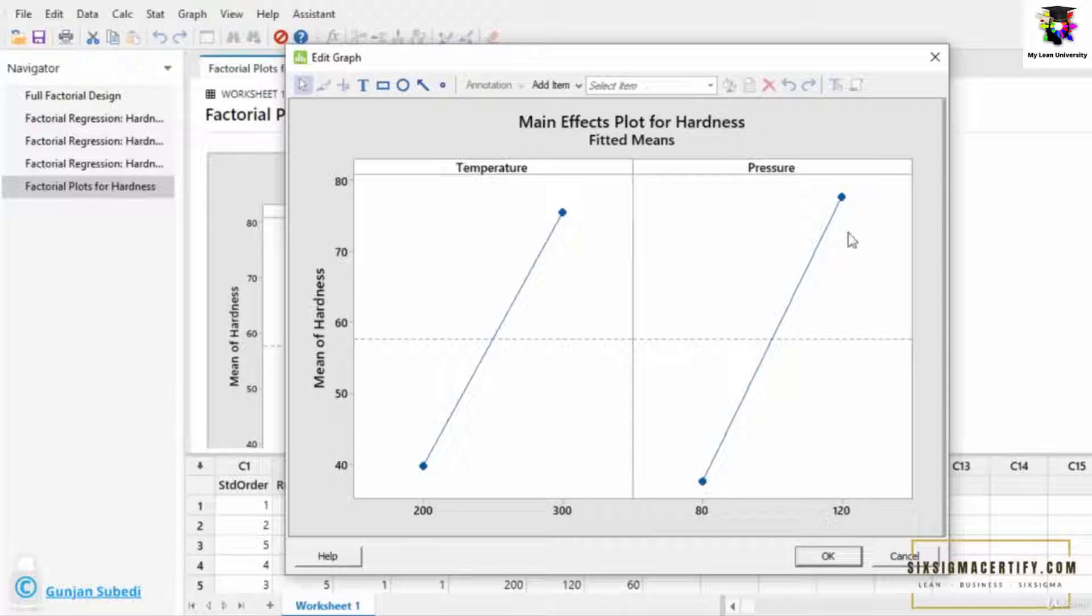And as you increase the pressure from 80 to 120 units, the hardness of the plastic also increases. So increase of both temperature and pressure increases the hardness of the plastic.